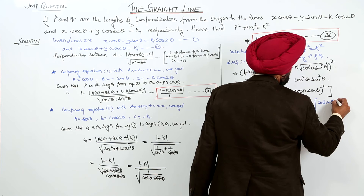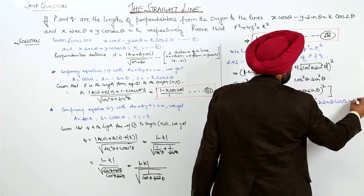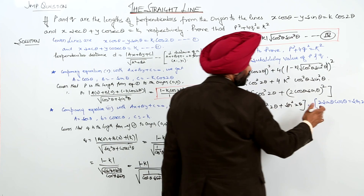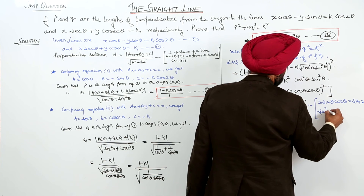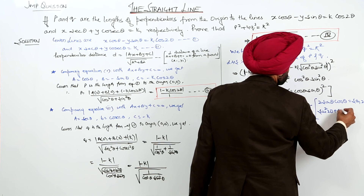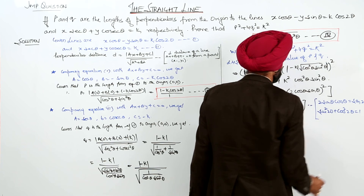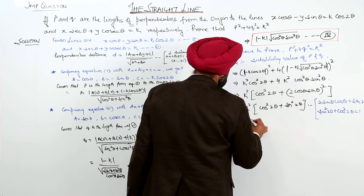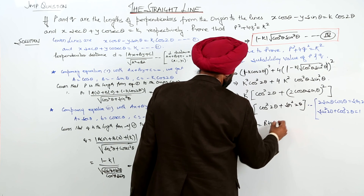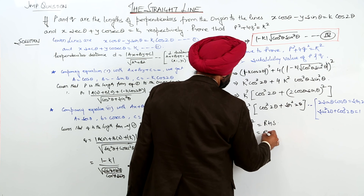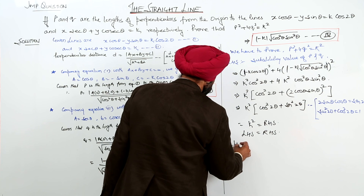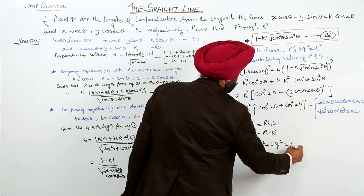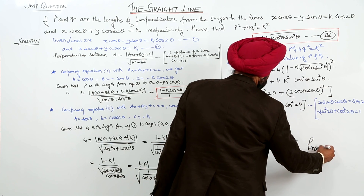Here we use the identities: 2 sin θ cos θ = sin 2θ, and sin² 2θ + cos² 2θ = 1. Applying these, the expression becomes k² × 1 = k² = R.H.S. Therefore, L.H.S. = R.H.S., hence p² + 4q² = k² is proved.